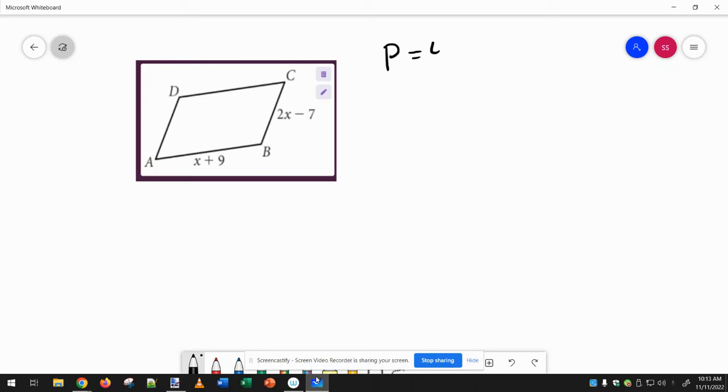So we're told the perimeter is 46 here and that it's a parallelogram, so that means the opposite sides are congruent. So if I add up everything and set it equal to 46 and solve for x, that's what we have to do.